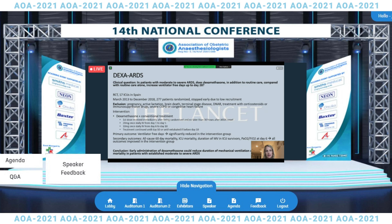All secondary outcomes including 60-day mortality, ICU mortality, duration of mechanical ventilation in ICU survivors, and the PaO2 to FiO2 ratio at six days all favored the dexamethasone intervention group. The authors concluded that the early administration of dexamethasone could reduce the duration of mechanical ventilation and overall mortality in patients with established moderate to severe ARDS.